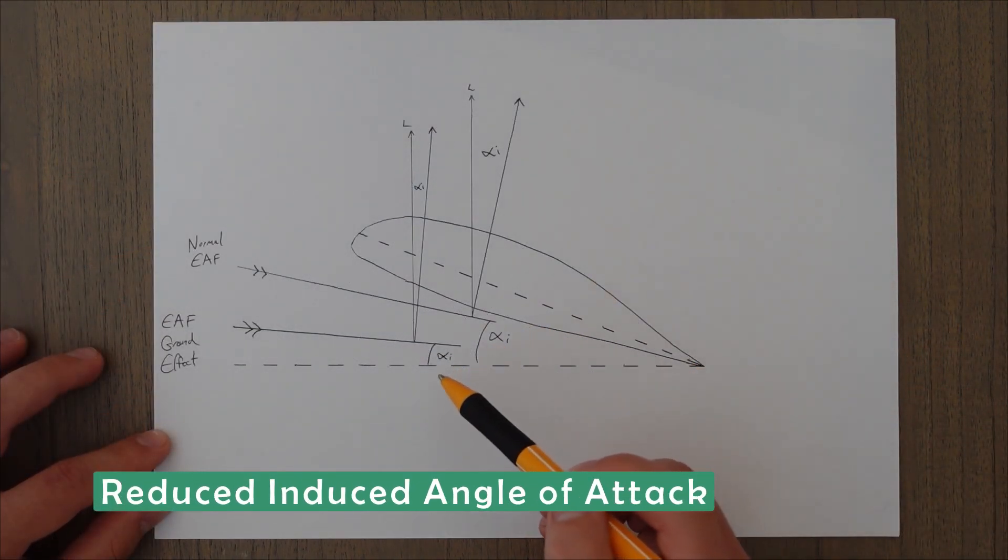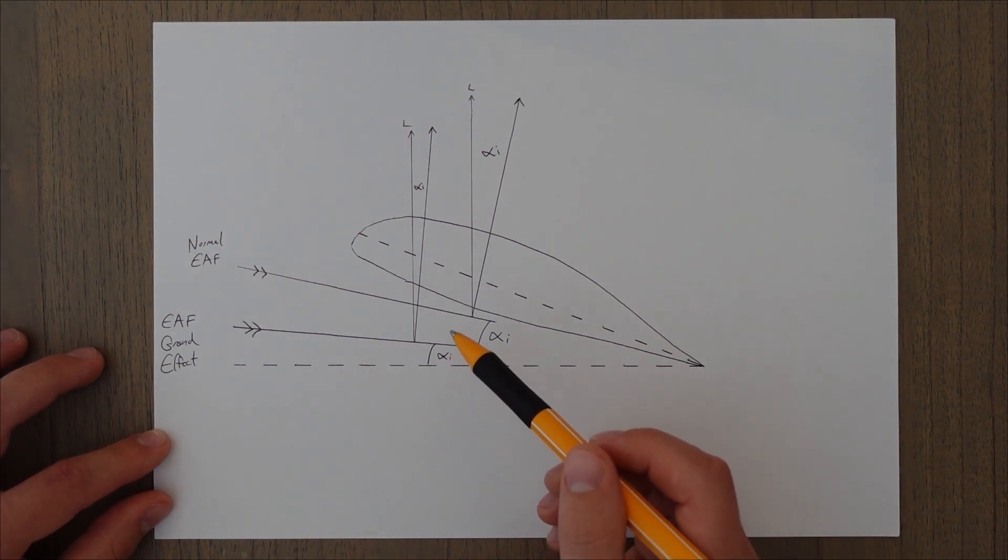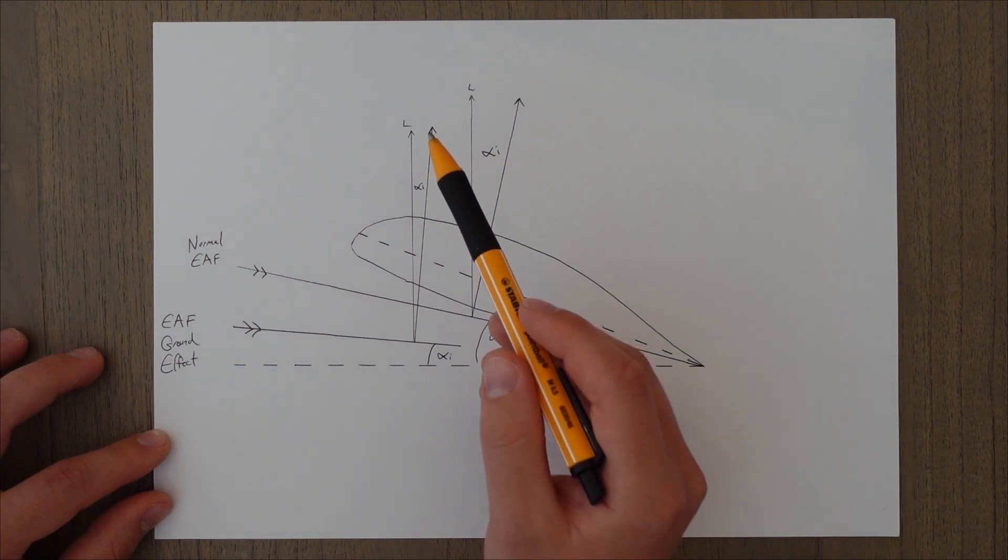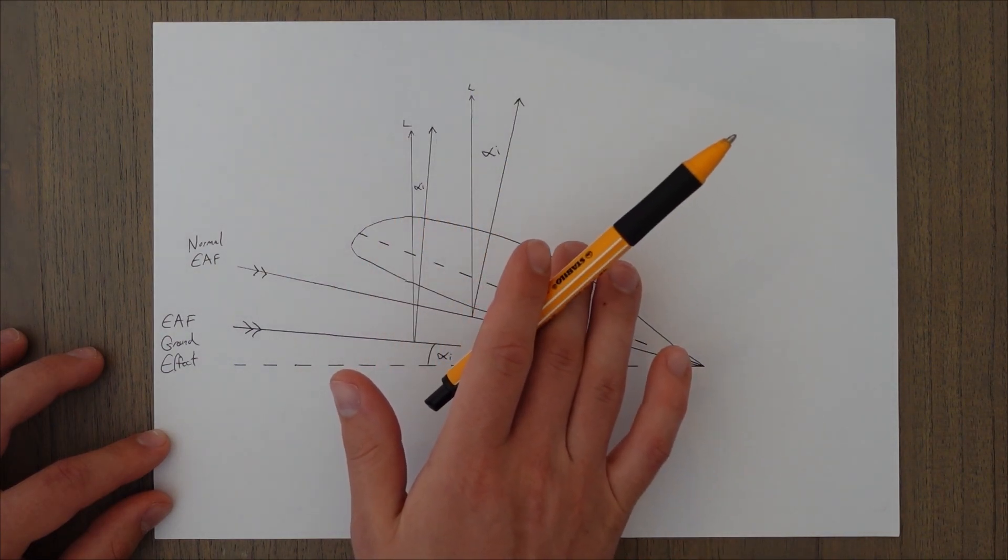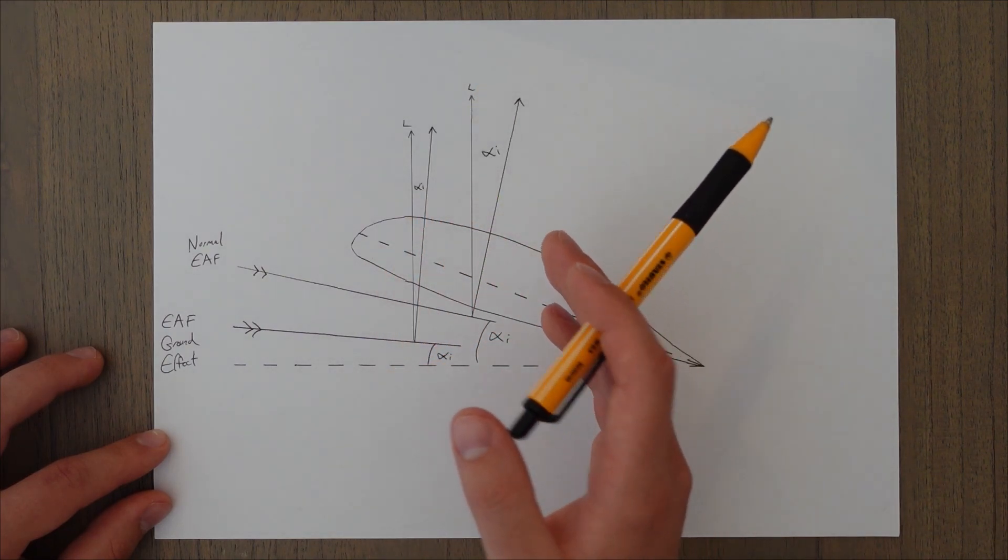That reduced amount of downwash over the whole wing means that we have a smaller induced angle of attack. That essentially means that our reaction force is less angled back and more angled up, so it's a greater proportion of lift or, as we said at the start, you could view that as a reduction in drag.